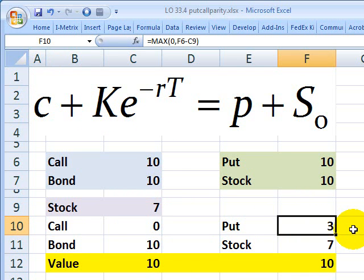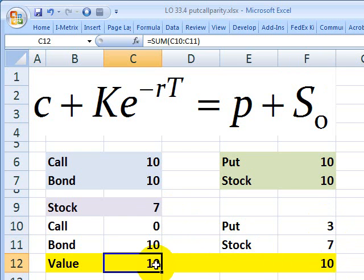On the right, this time, if the stock drops, the put is now in the money, and we can exercise for a gain of $3. That's $10 strike minus the lower stock of $7 gives us an intrinsic value of $3 at expiration. We hold a single share of the stock, which is now down at $7, meaning this portfolio is worth $3 plus $7, or $10.